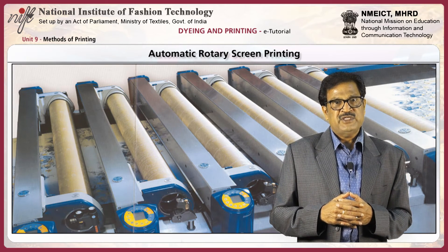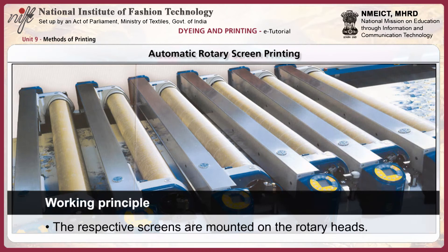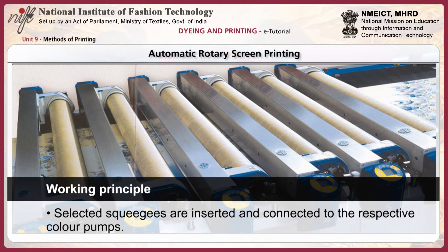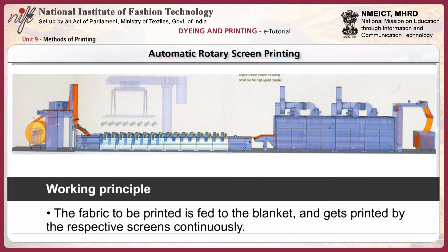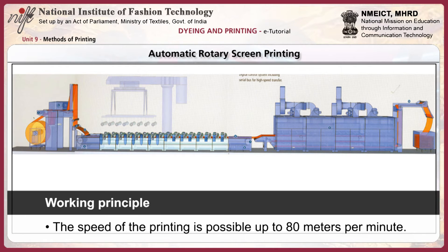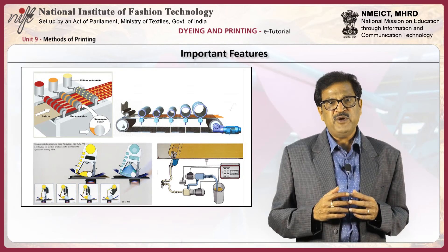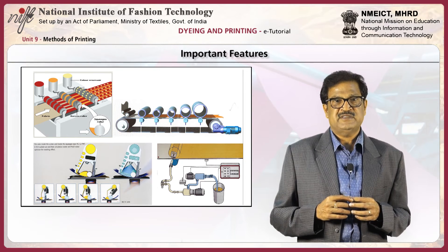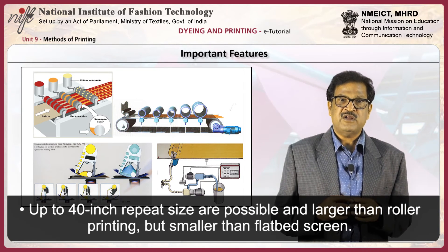Next, we will discuss automatic rotary screen printing. Working principle: The respective screens are mounted on the rotary heads. Selected squeegees are inserted and connected to the respective color pumps. The fabric to be printed is fed to the blanket and gets printed by the respective screens continuously. The printed fabric is conveyed through the dryer and plaited. It is possible to print at speeds up to 80 meters per minute. Repeat sizes up to 40 inches are possible.